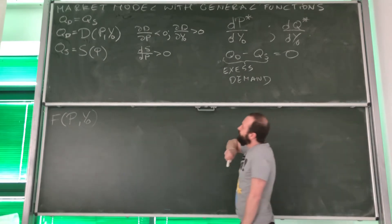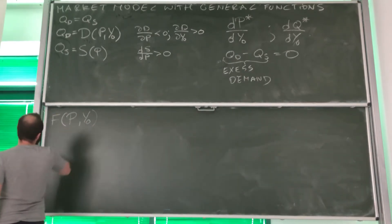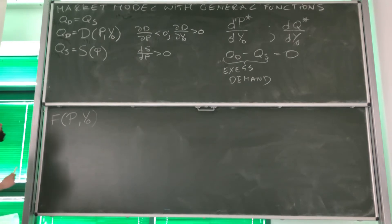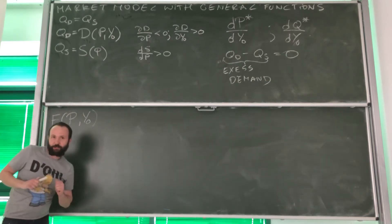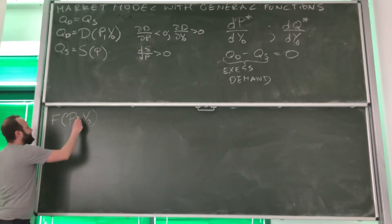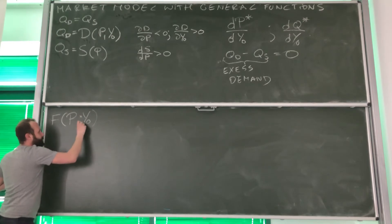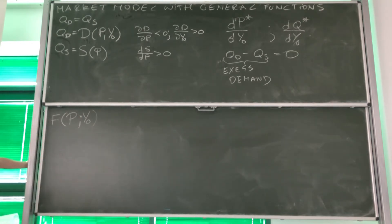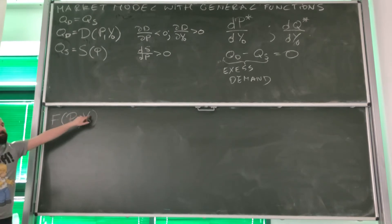In this model, price is an endogenous variable. However, income is exogenous. So we're going to separate endogenous variables from exogenous variables with semicolon. Endogenous, exogenous, right?